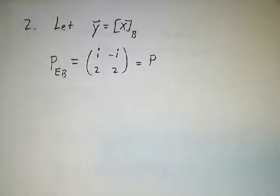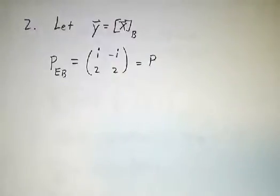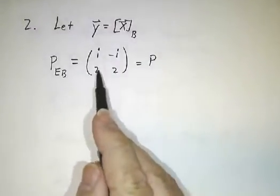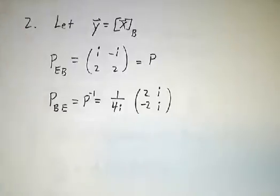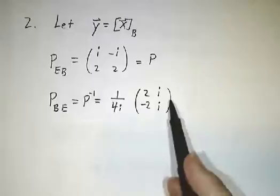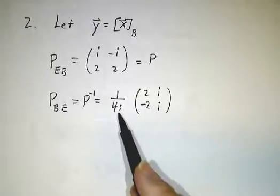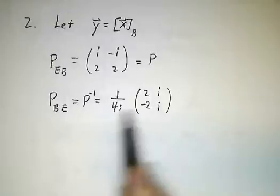Now, as always, we let our y vector be the coordinates of our x vector in the b basis. So our change of basis matrix is given by the two eigenvectors, and its inverse. We use the usual formula for the inverse of a 2x2, and okay, it's got a 4i in the denominator, and it's got complex numbers in it, but the same formulas as always work.